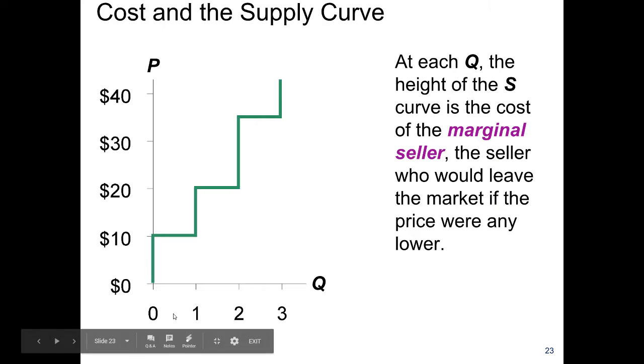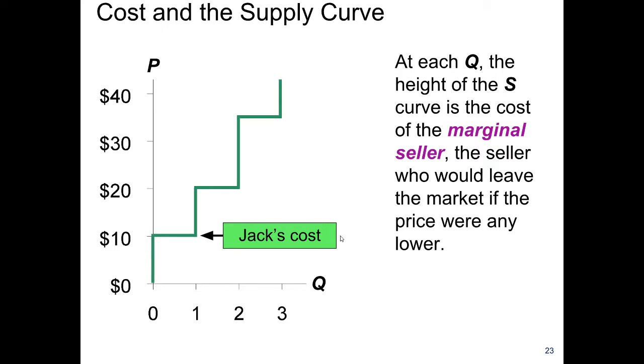Similarly, we can also read it vertically. Between 0 and 1, the height of the supply curve is $10, which is Jack's cost of cutting the lawn. Remember, Jack was the first in line on Black Friday and got his grass cutter for $10.